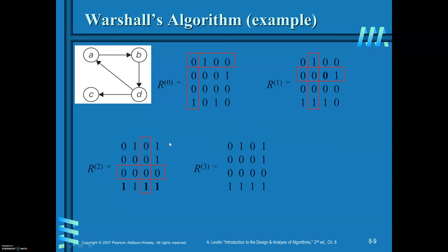In the third iteration, introduce the third vertex C as the intermediate by boxing the third row and third column. In the first, second, and third rows the column element is 0, so no change is expected. In the final row, the column element is 1, but already all elements of the last row are 1, so there is no 0 to replace. No changes occur in this iteration.